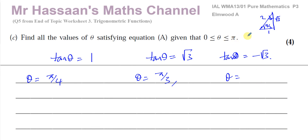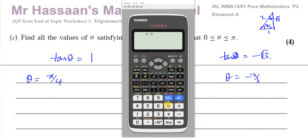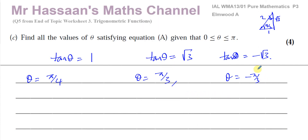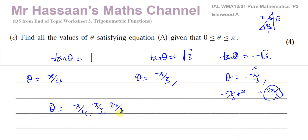For tanθ = -√3: since it's negative, the solution is in the second quadrant. Inverse tan(-√3) gives -π/3 as the principal value (we can verify with a calculator). Adding π to get into our range: -π/3 + π = 2π/3. So the three solutions within 0 to π are: θ = π/4, π/3, and 2π/3. That's the complete answer to question five part (c).